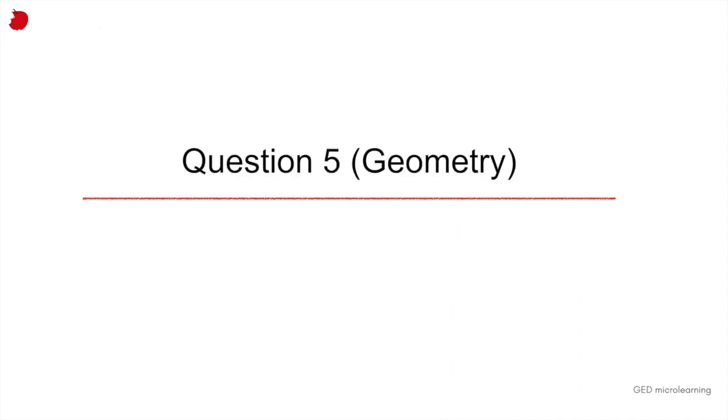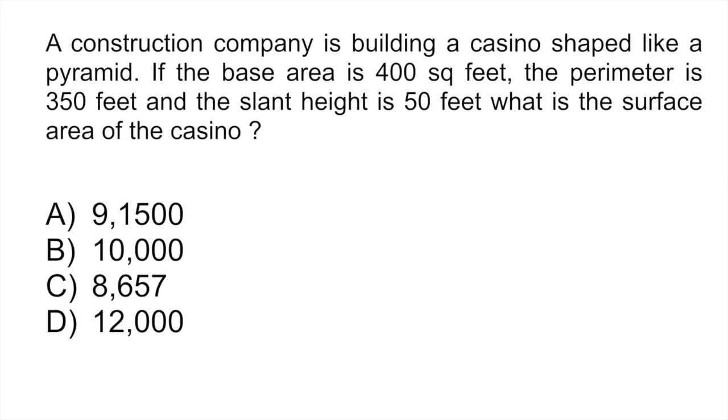The final question is a geometry question. A construction company is building a casino shaped like a pyramid. If the base area is 400 square feet, the perimeter is 350 feet, and the slant height is 50 feet, what is the surface area of the casino?